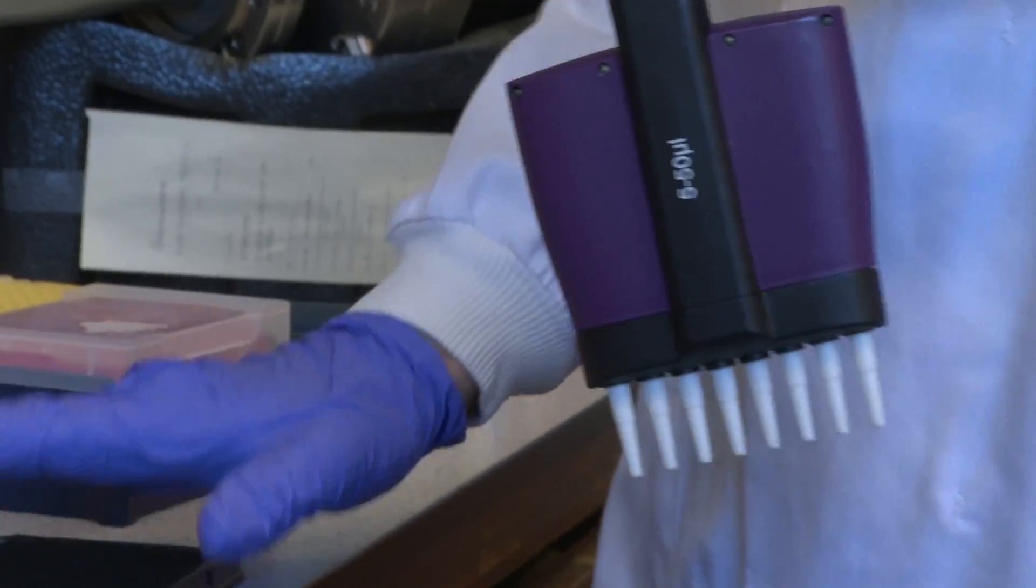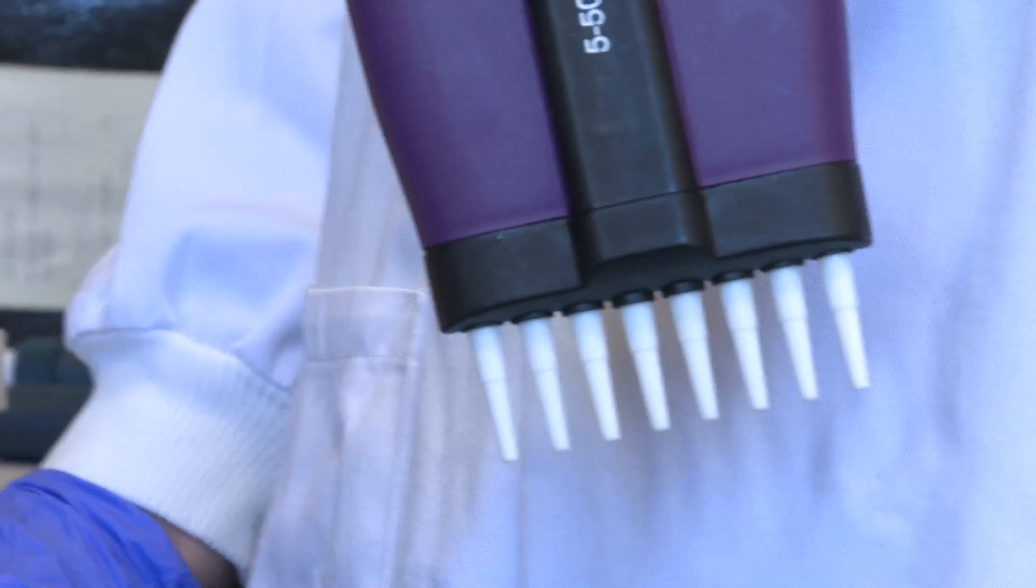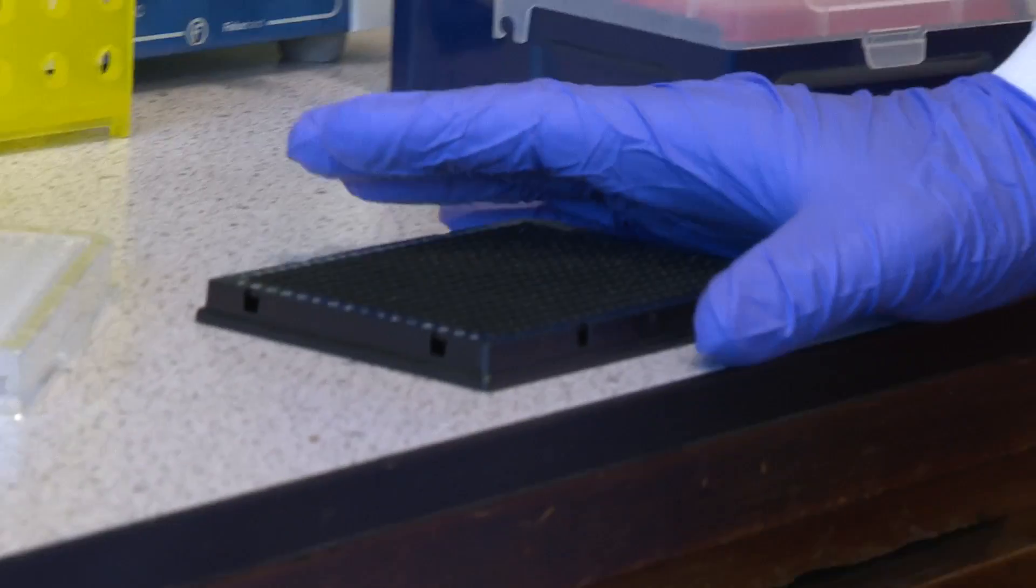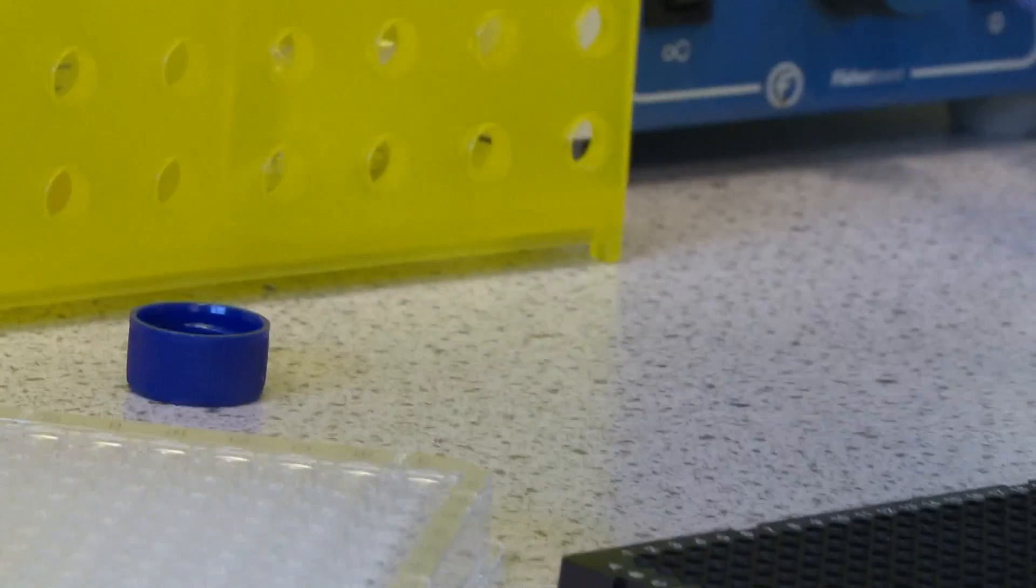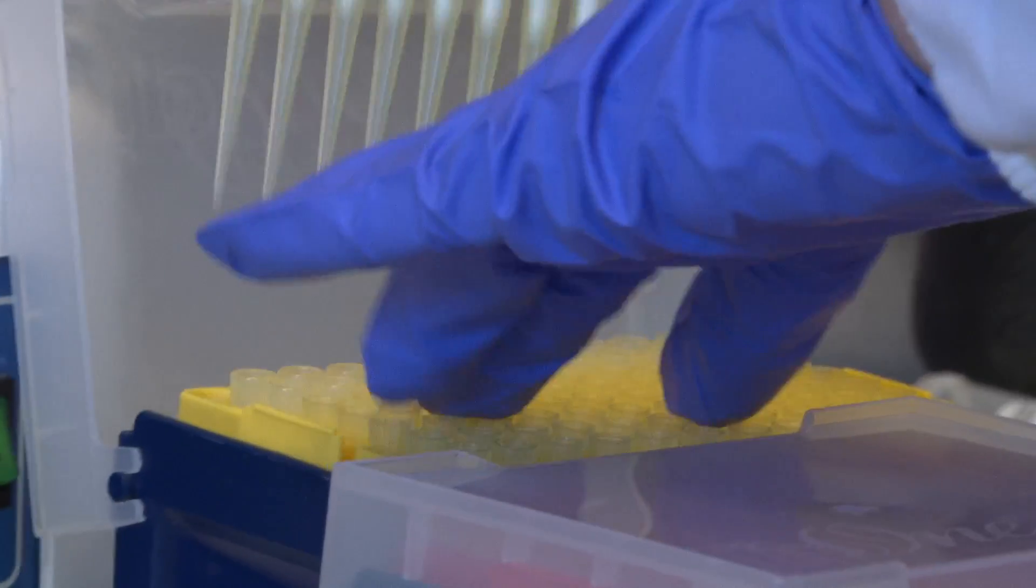So we've got 10 microlitres. In some of these wells, we've got 10 microlitres of water already. And in some of them, we've got 10 microlitres of a solution of ascorbic acid. So I'm just going to fill up the wells with another 30 microlitres.